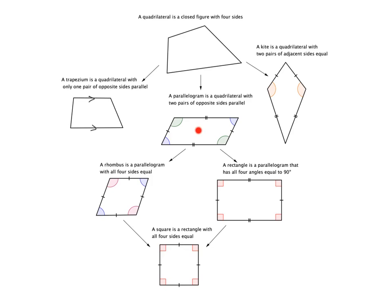We could also specialize the parallelogram in a different way by making one angle equal to 90°, which gives us a rectangle. A rectangle is a special parallelogram where all four angles equal 90 degrees. It still has the parallelogram property that pairs of opposite sides are equal, but the special thing about the rectangle is that all angles are 90°.